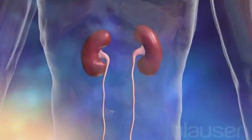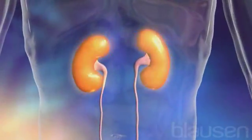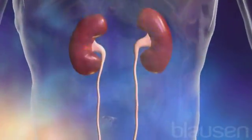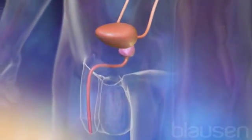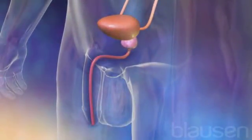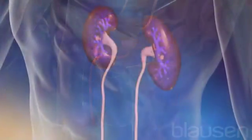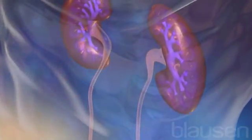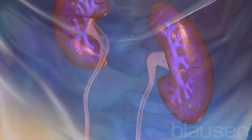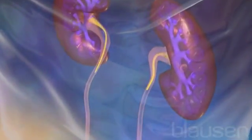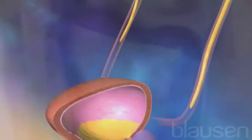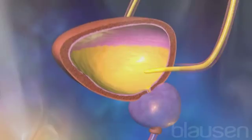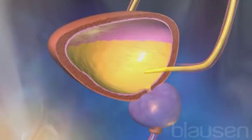The urinary system is composed of two kidneys, two ureters, the bladder, and the urethra. The kidneys remove waste products from the blood and form urine. Urine then travels through the tube-like ureters and is stored in the bladder before it is eliminated from the body via the urethra.